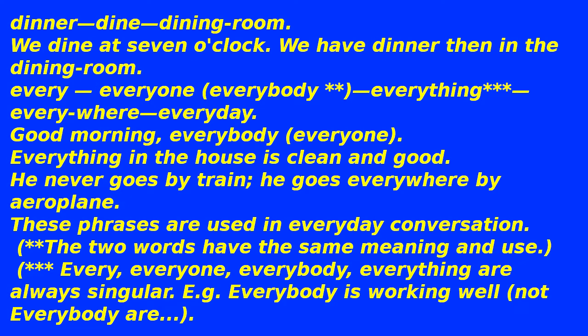Dine/dining room — 'We dine at seven o'clock; we have dinner then in the dining room.' Every/everyone/everybody/everything/everywhere — 'Good morning everybody.' 'Everyone and everything in the house is clean and good.' 'He never goes by train; he goes everywhere by airplane.' These phrases are used in everyday conversation; the two words have the same meaning and use. Note: 'every', 'everyone', 'everybody', 'everything' are always singular — e.g., 'Everybody is working well', not 'everybody are'.